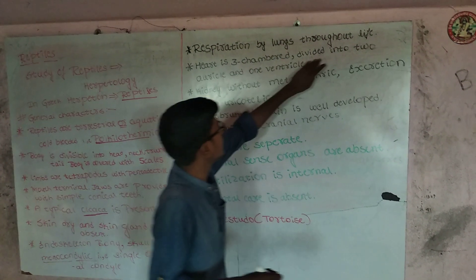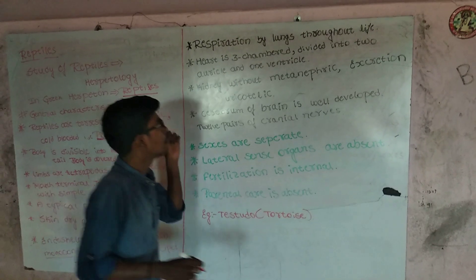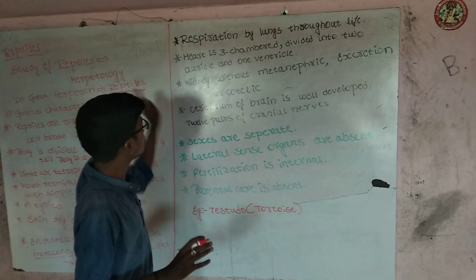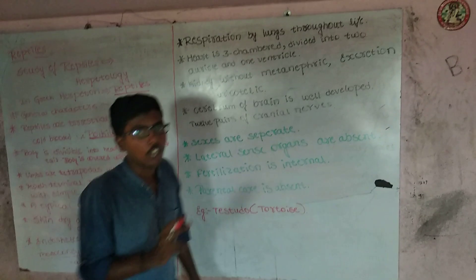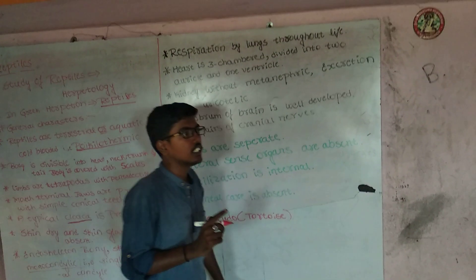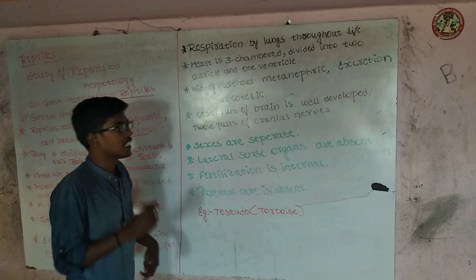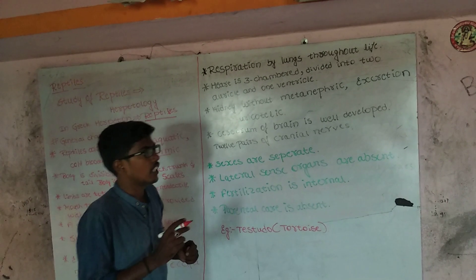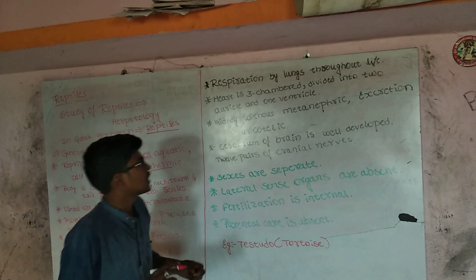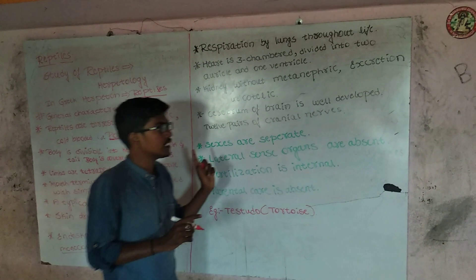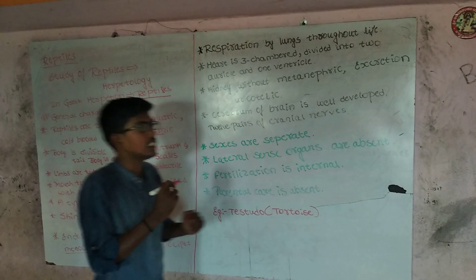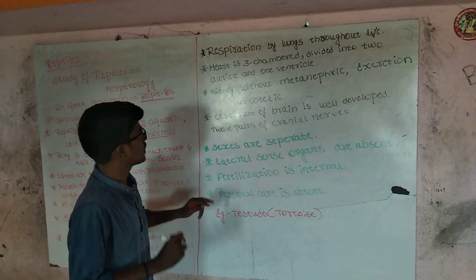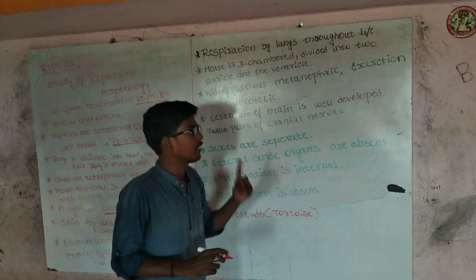Heart is 3-chambered, divided into 2 auricles and 1 ventricle, and the inter-ventricular septum is not completely divided. In the case of fishes, heart is 2-chambered — that is 1 auricle and 1 ventricle — and sinus venosus and conus arteriosus are present. In the case of amphibians, heart is 3-chambered — 2 auricles and 1 ventricle — sinus venosus is present, and conus arteriosus changes into truncus arteriosus. Truncus arteriosus is divided into 2 systemic arches and 1 pulmonary arch.